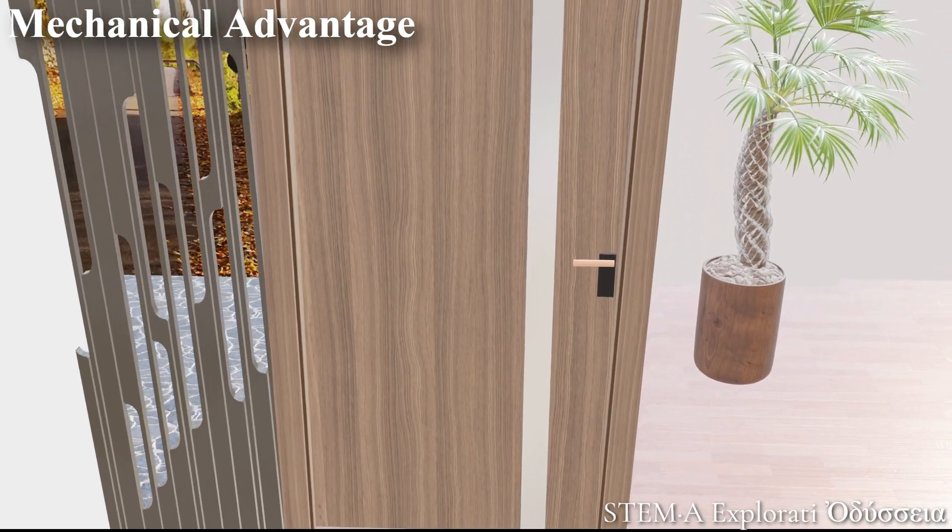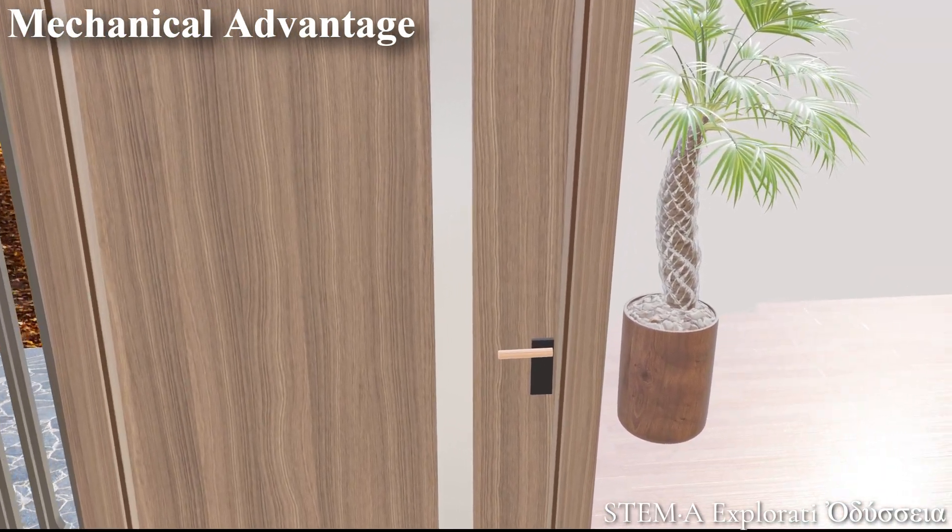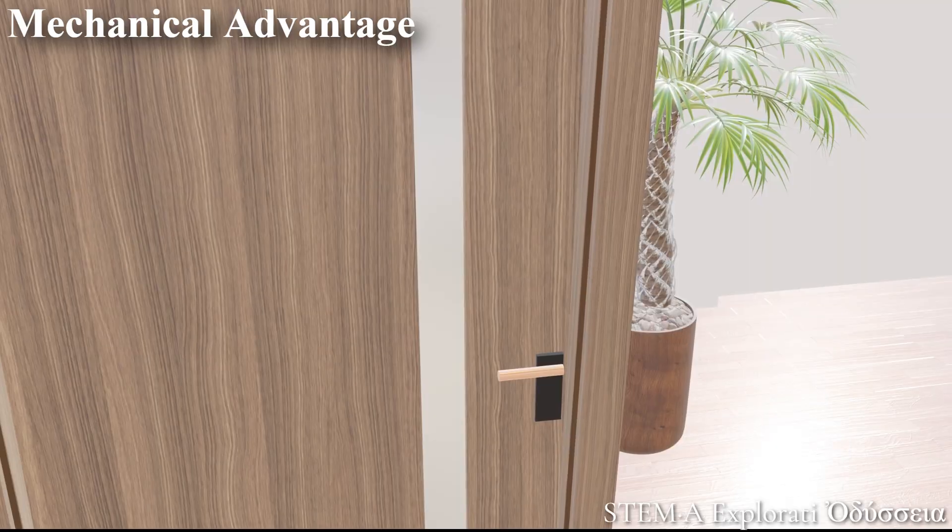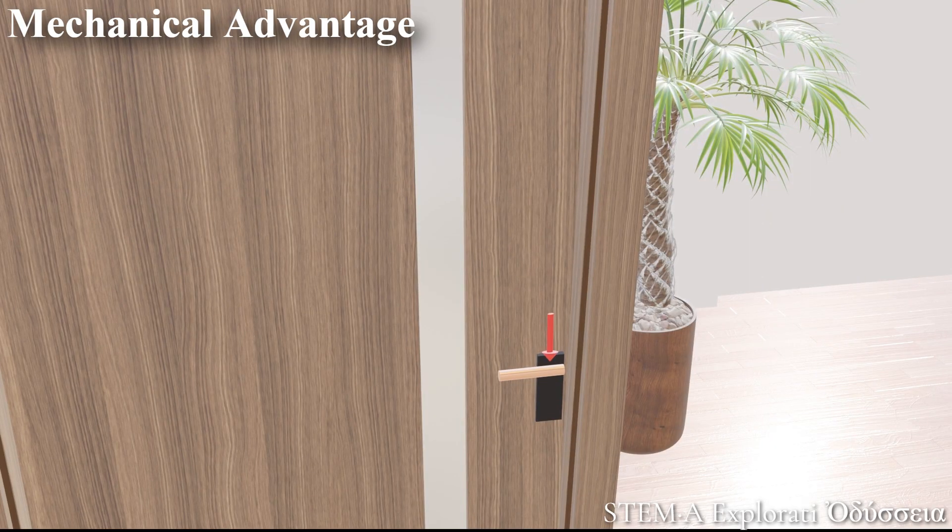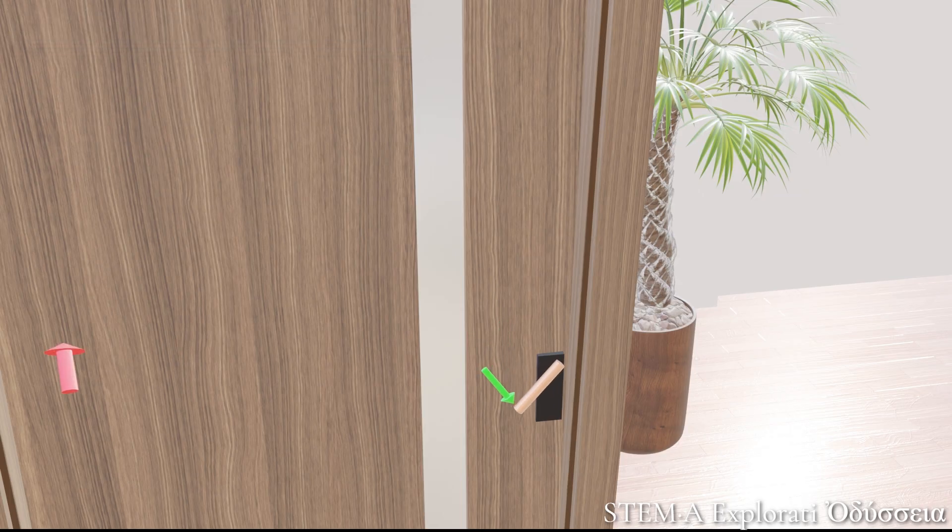Example number two, the door handle. Let's try a quick experiment. Try pushing down the lever by placing your finger right next to the pivot point. Feels tough, right? Next slide your finger all the way to the end of the handle. And suddenly, it's so much easier.